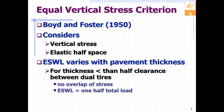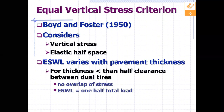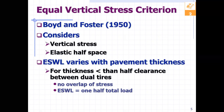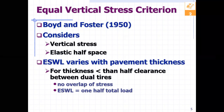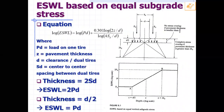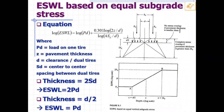For a thickness less than half the clearance between dual tires, there is no overlap of stresses, and the equivalent single wheel load is just one half of the total load. When the thickness is more than half the clearance, there is overlap, and after a certain point there is complete overlap. That is illustrated on the right-hand side.